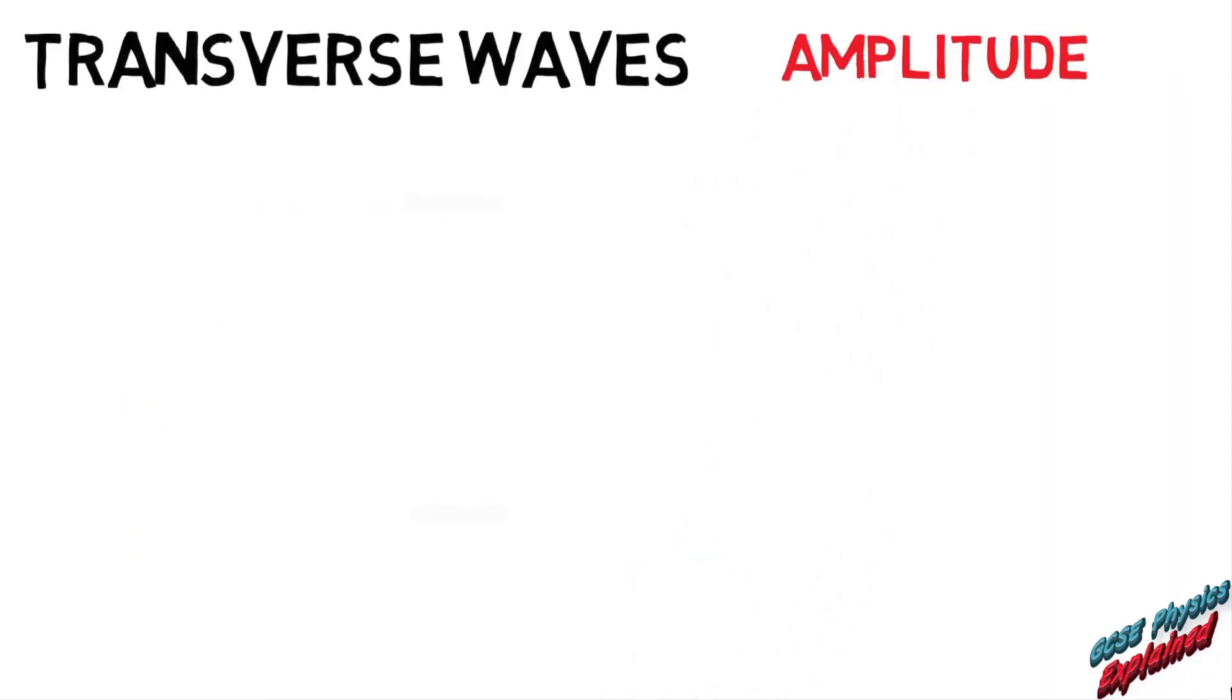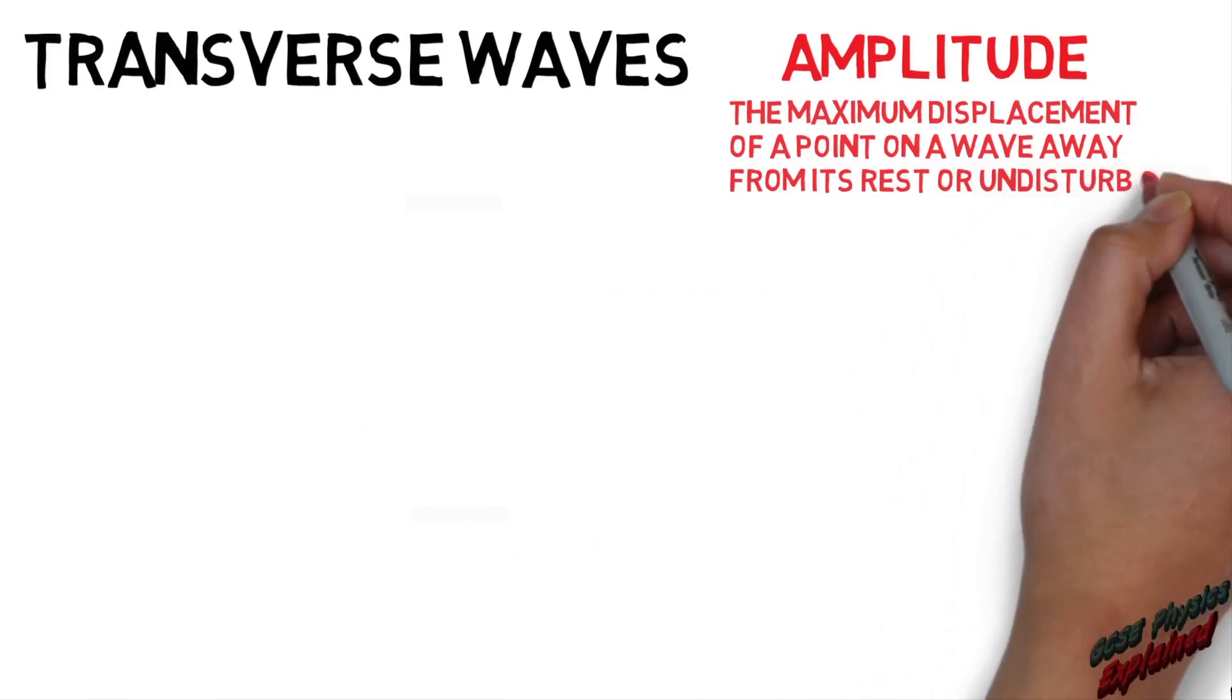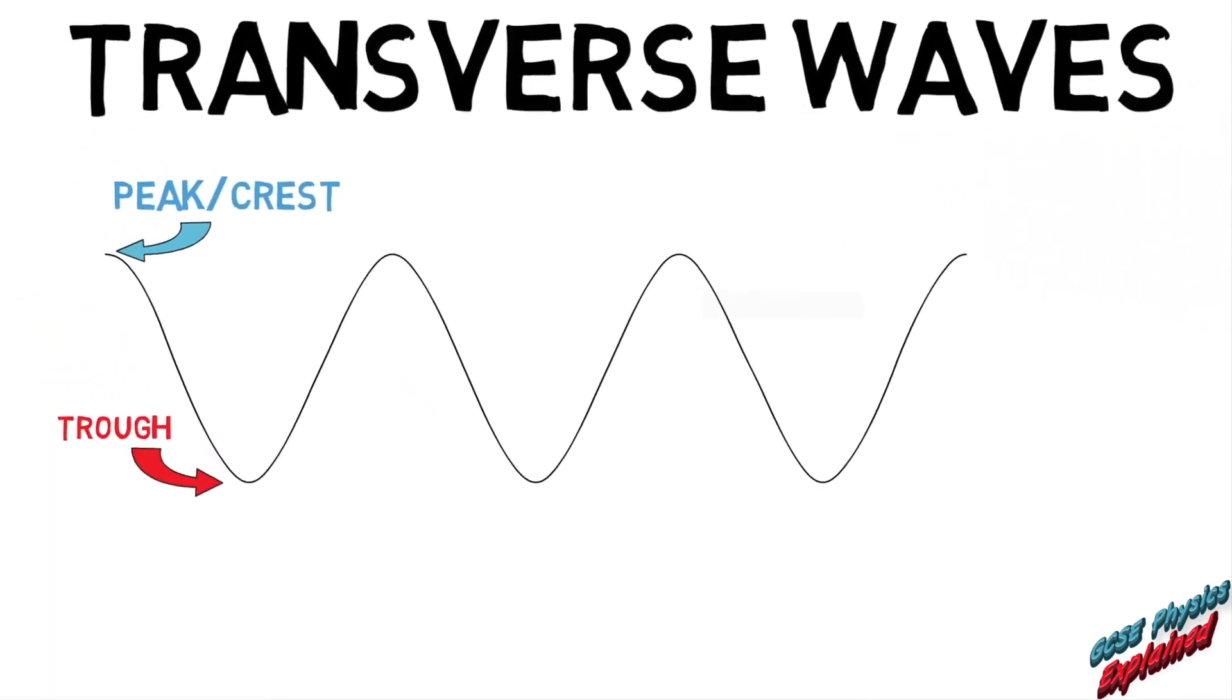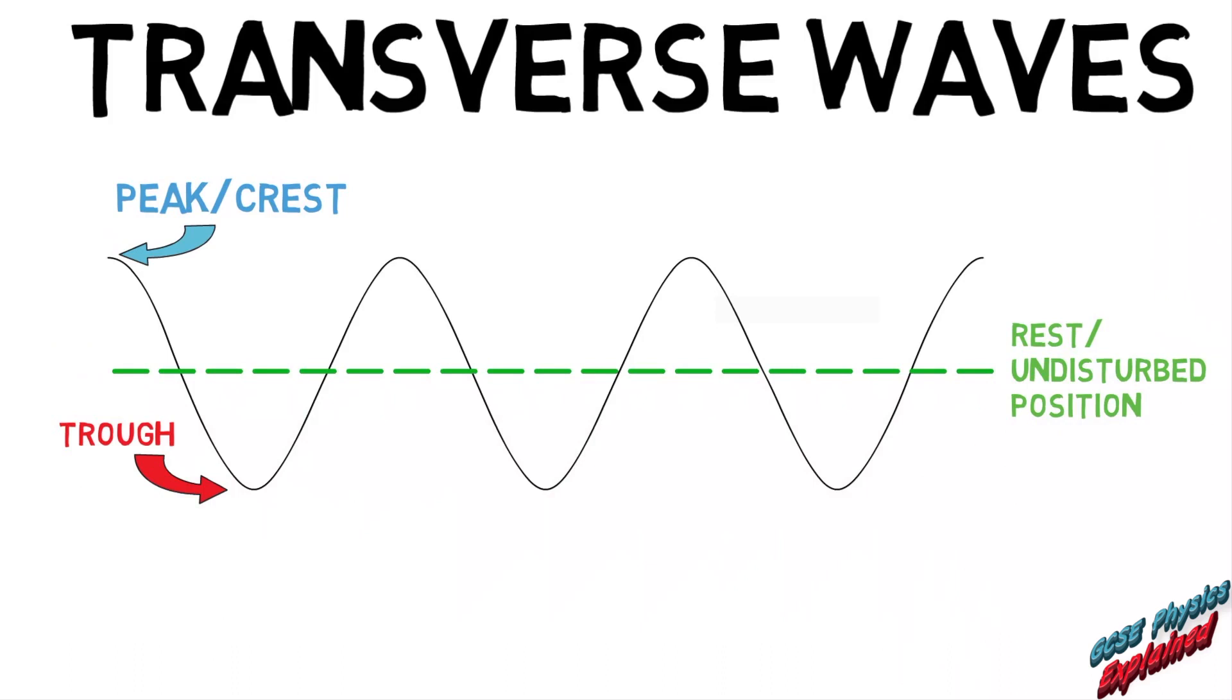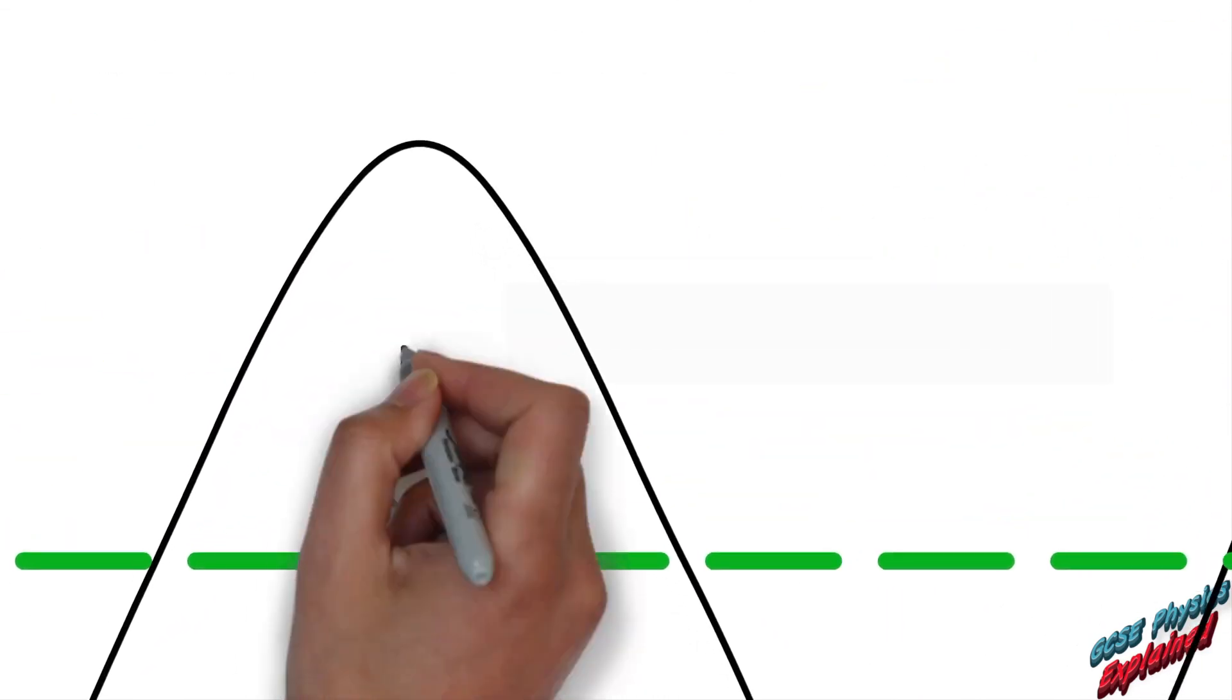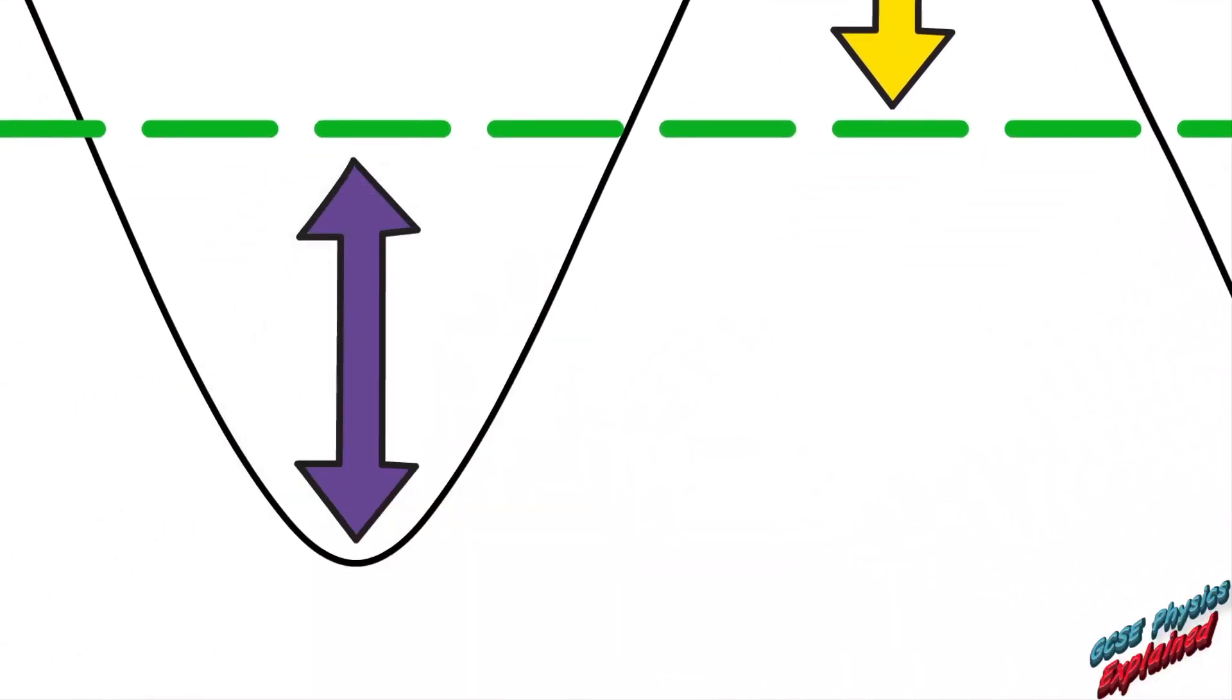Amplitude is the maximum displacement of a point on a wave, away from its rest or undisturbed position, in metres. This means the distance from the dotted line to the peak, or from the dotted line to the trough.